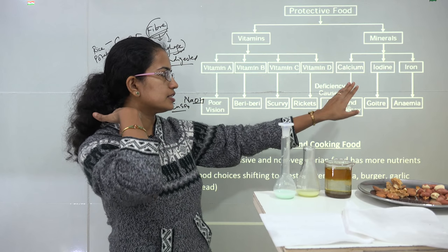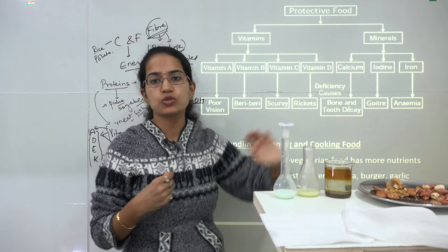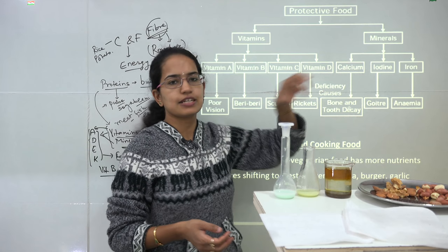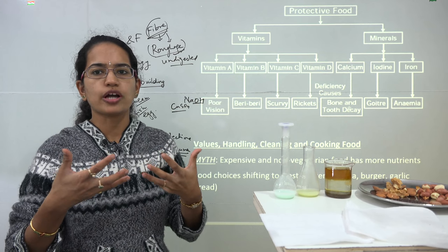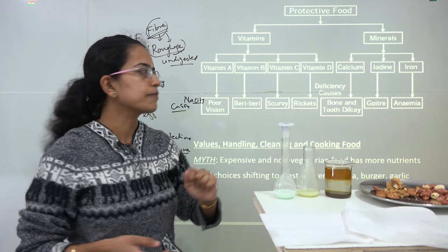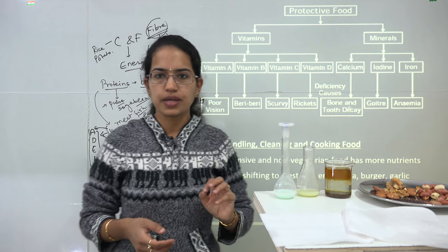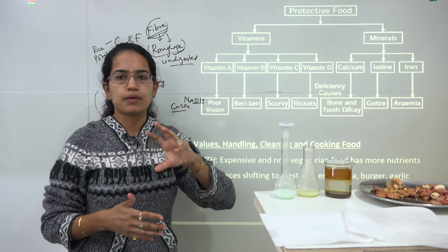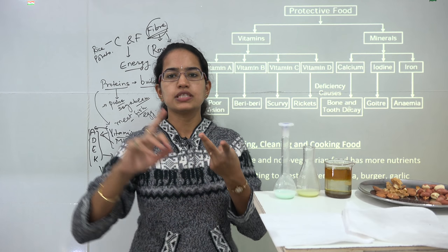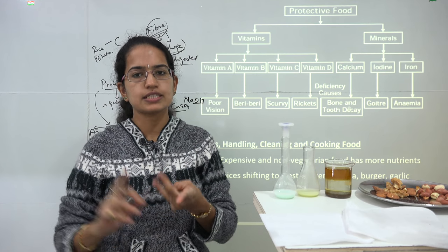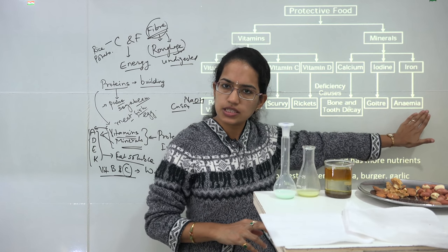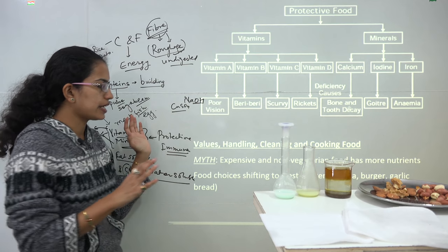From minerals, the predominant ones are iron, iodine, and calcium. Calcium helps in the formation of strong bones, and its deficiency leads to breaking or decay of bones. Deficiency of iodine leads to goiter. Iron deficiency leads to anemia, which is a lack of hemoglobin in the blood. Blood comprises three cells: RBC (red blood cells), WBC (white blood cells), and platelets. Red blood cells contain hemoglobin, and deficiency of hemoglobin leads to anemia.